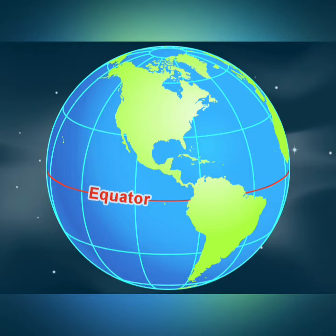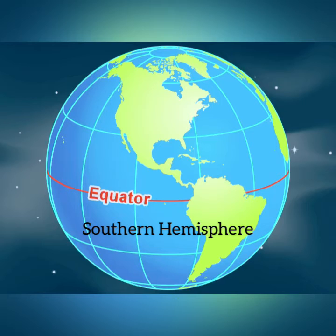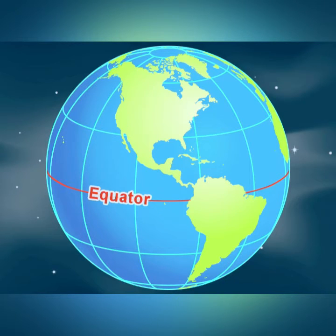Another imaginary line is the equator. This line running on the globe divides it into two equal parts. The northern half of the earth is known as the northern hemisphere, and the southern half is known as the southern hemisphere — they are both equal halves. Therefore, the equator is an imaginary circular line and a very important reference point to locate places on the earth.